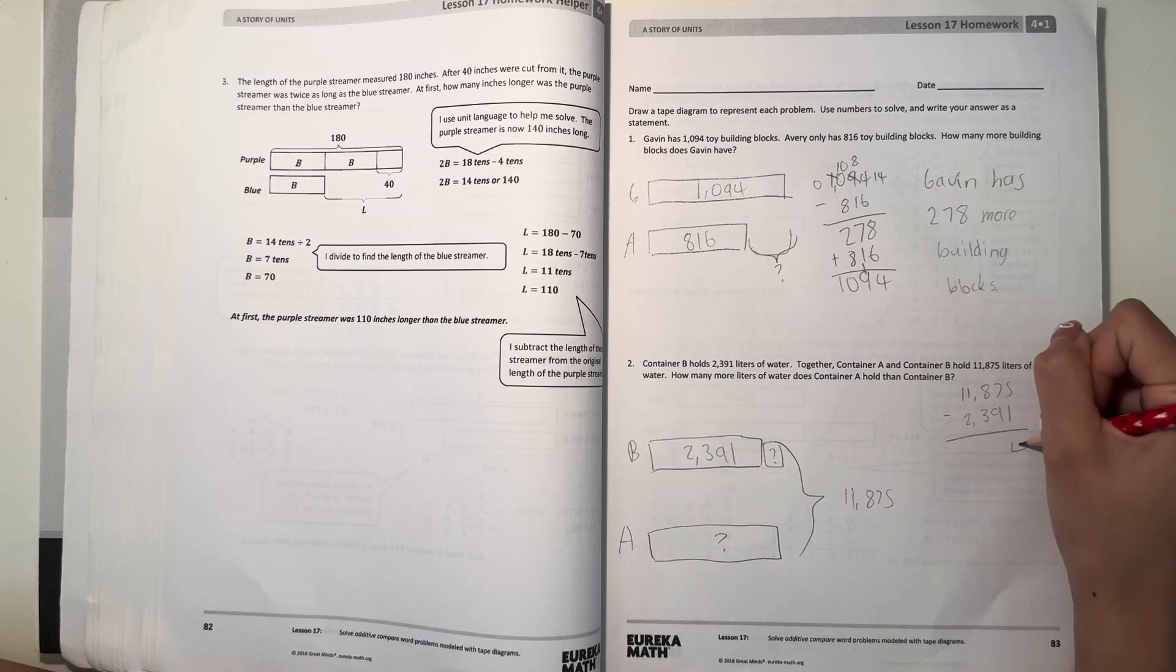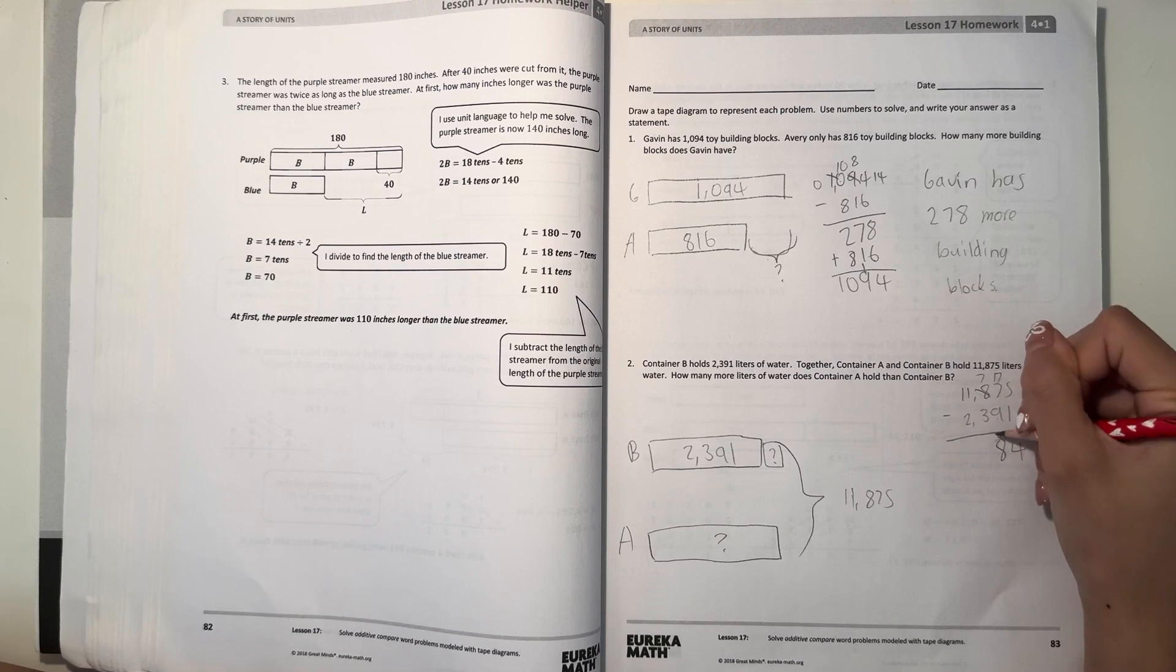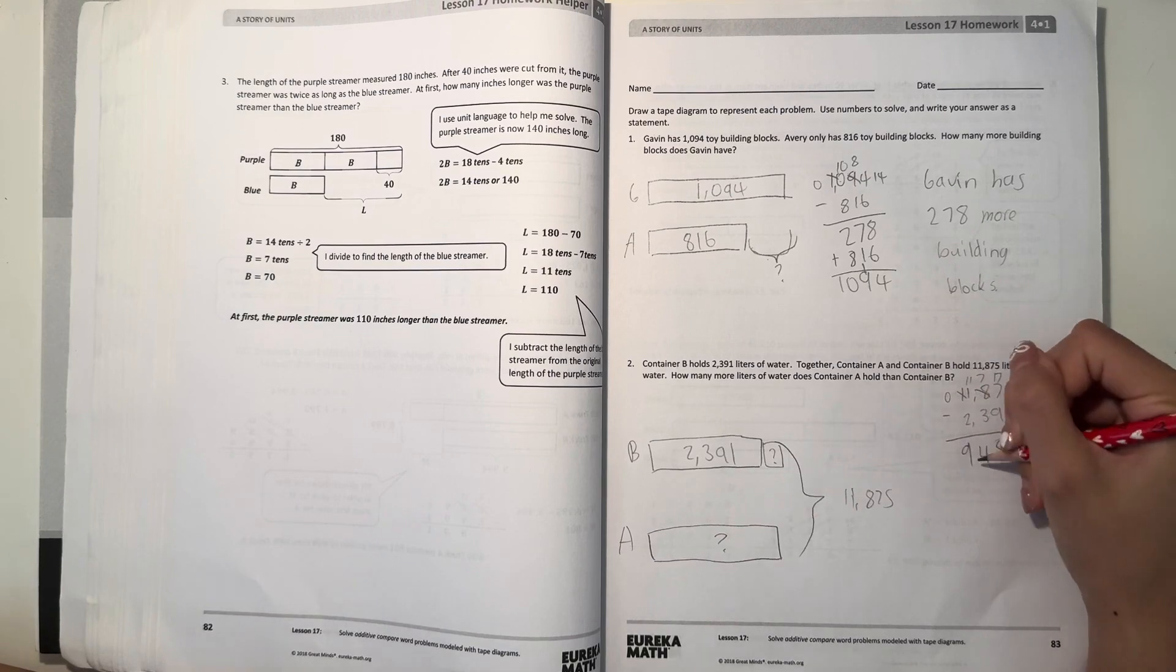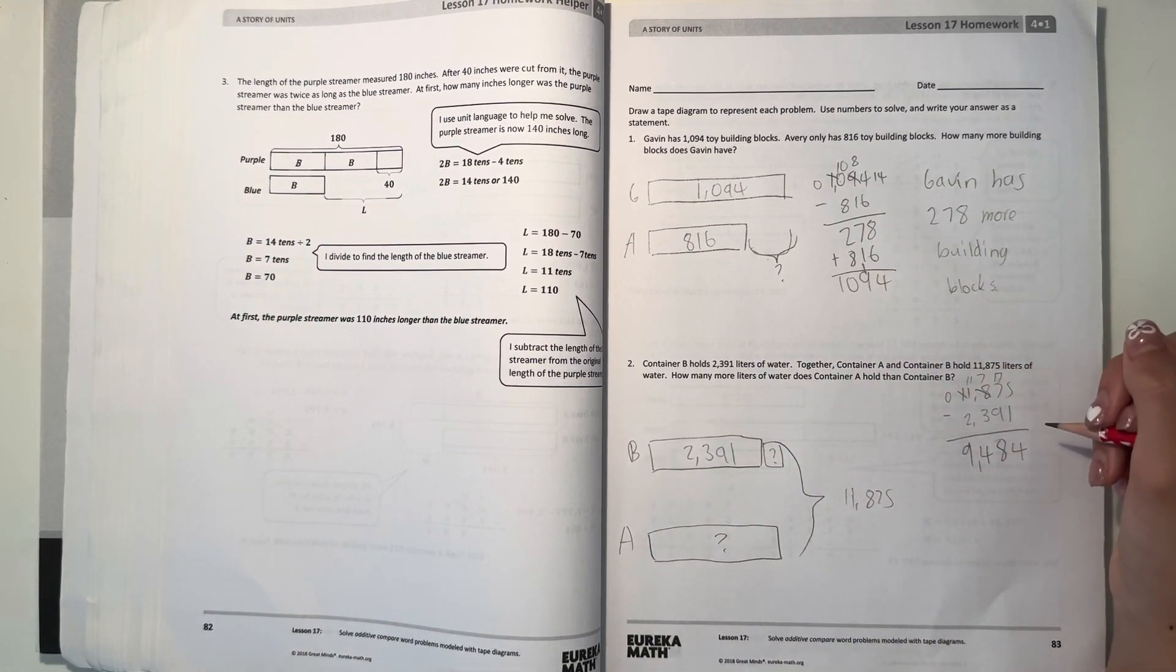5 minus 1 is 4. 7 minus 9, borrow a 10. 17 minus 9 is 8. 7 minus 3 is 4. 1 minus 2, borrow a 10. 11 minus 2 is 9. So that's how much container A holds.